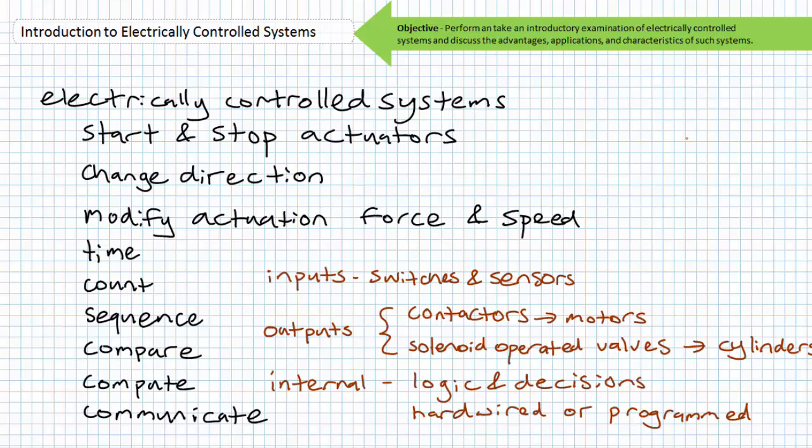Actuators like motors and hydraulic cylinders are the primary outputs of an electrically controlled system. They are in effect the hands and feet of a system, being that portion that does the actual lifting, lowering, moving, punching, pushing, or pulling. The actuators, however, only move at the request of the electrically controlled system.